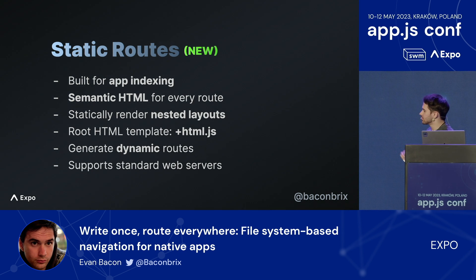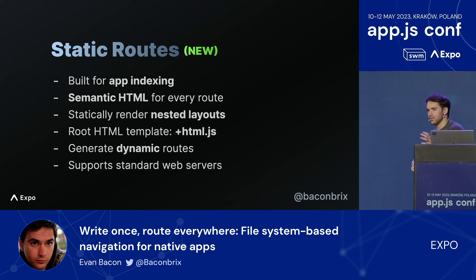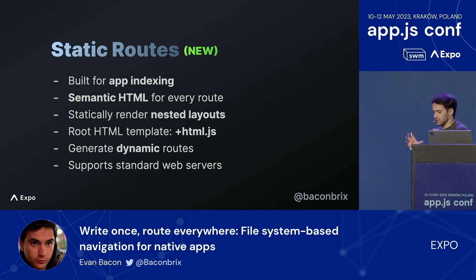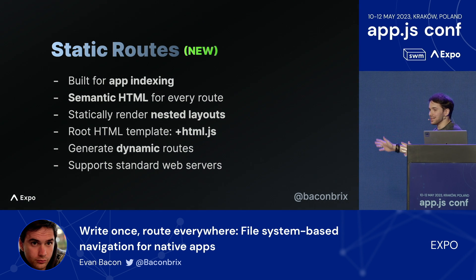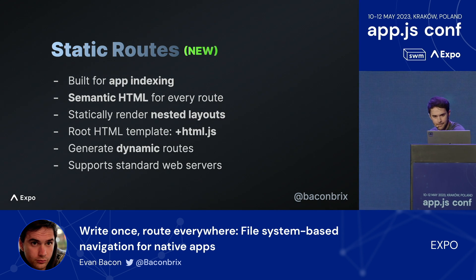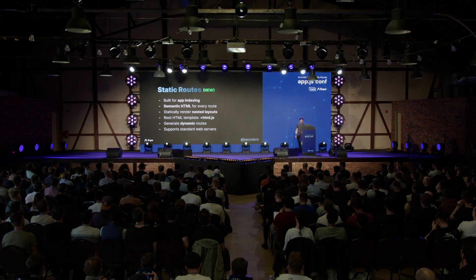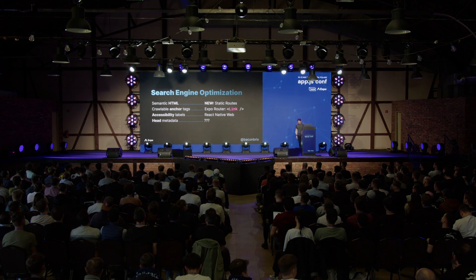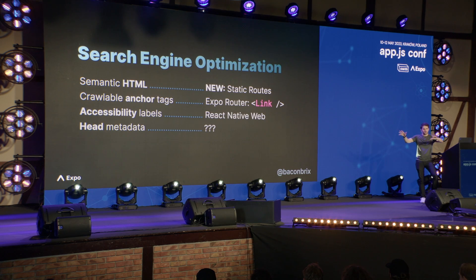Expo SDK 49 will be the first version of Expo to support static site generation. When you use Expo on web and on native, you now have this clear path to universal SEO for everything in your app — not just a few key features, literally everything — which has never been possible before. There are a number of factors that search engines consider when indexing content. Static routes provide the most important part, and the Expo Router Link component actually magically turns into anchor elements when you run it on web so they can crawl and find all the other pages.